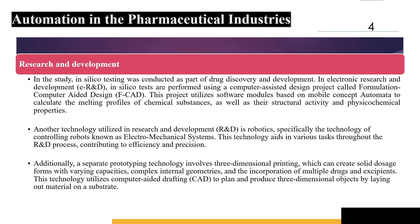Another major important technology used in quality-based R&D is robotics, especially the technology of controlling robots known as electromechanical systems, which are mainly responsible for aiding in various tasks throughout R&D processes. Additionally, a separate prototyping technology involves three-dimensional printing, which can actually create solid dosage forms with varied capacities, complex internal geometries, and incorporation of multiple drugs.